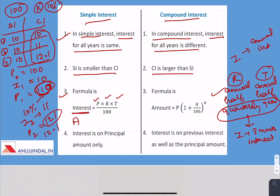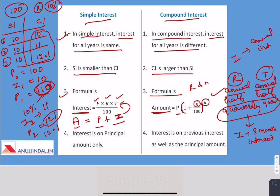The amount in simple interest is simply principal plus interest. For compound interest, the formula for the amount is: A = P × (1 + R/100)^N, where R is the rate of interest and N is the number of time periods. Again, R and N must be in the same time units — if R is annual, N should also be annual; if R is quarterly, N should also be quarterly.